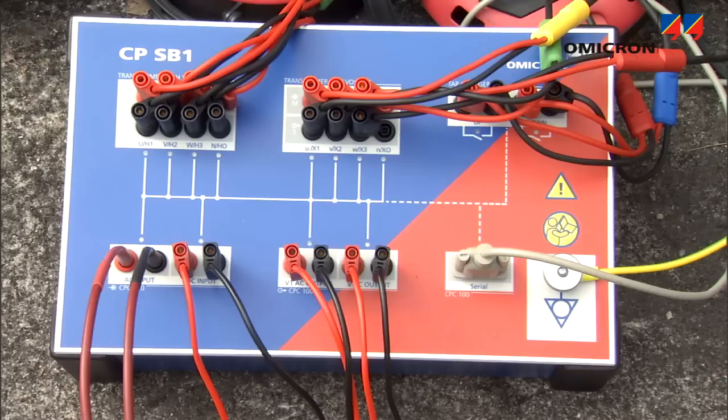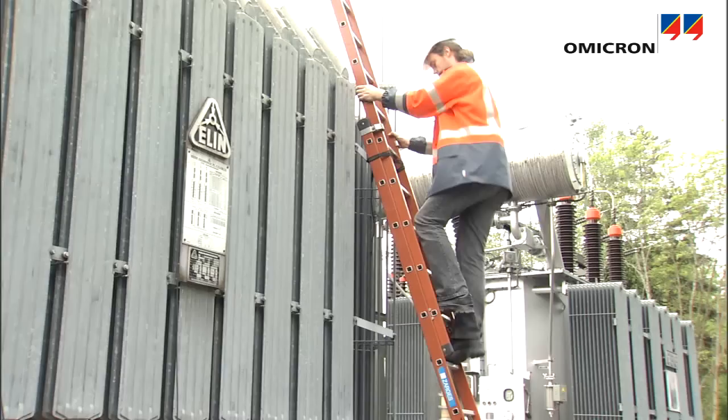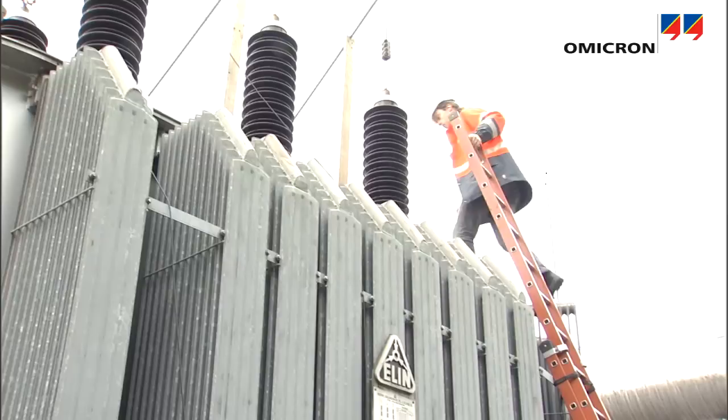The CPC100 and the CPSB1 switchbox make ratio and winding resistance measurements efficient by avoiding climbing up and down the transformer repeatedly and reducing connection errors.